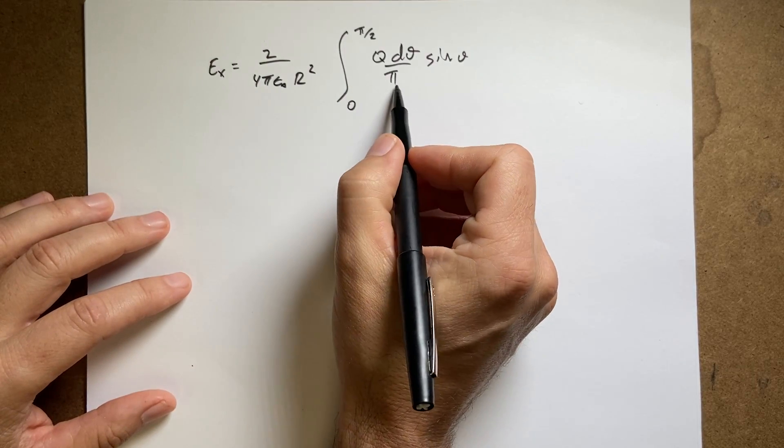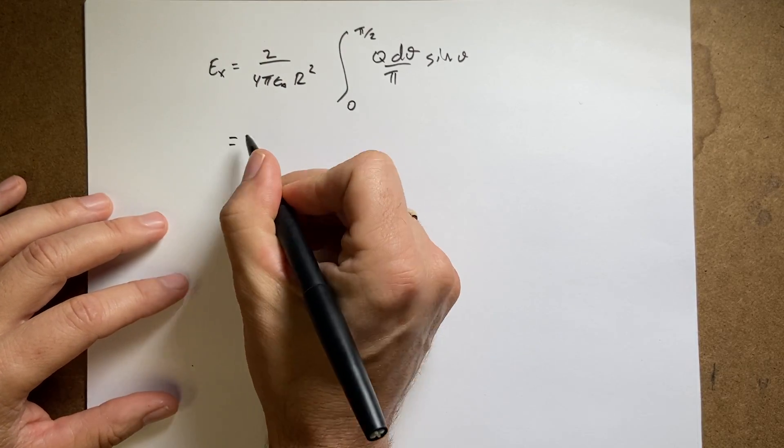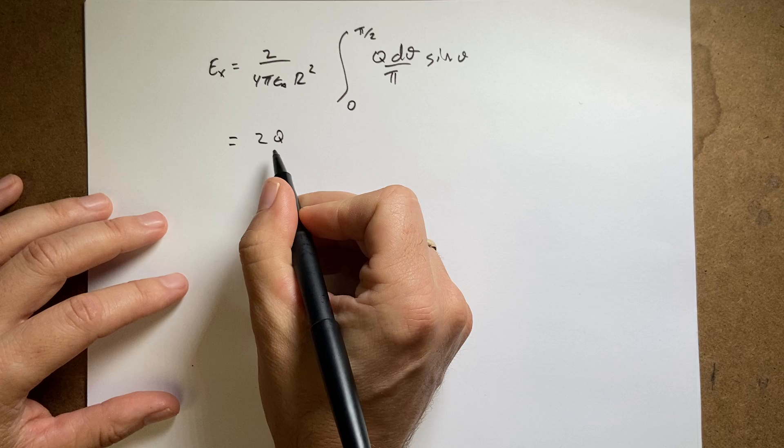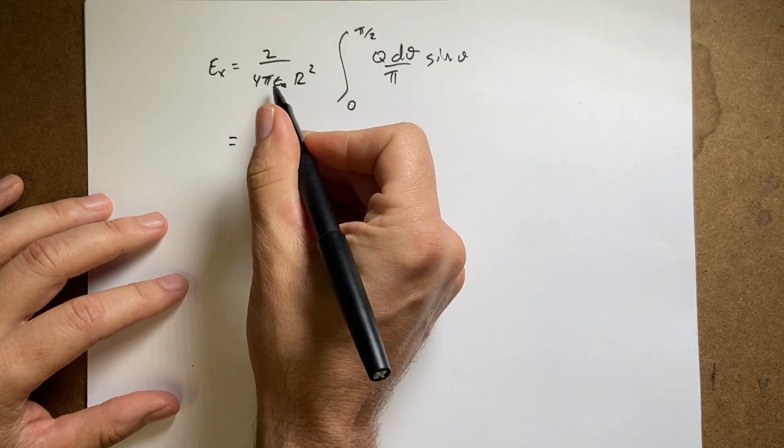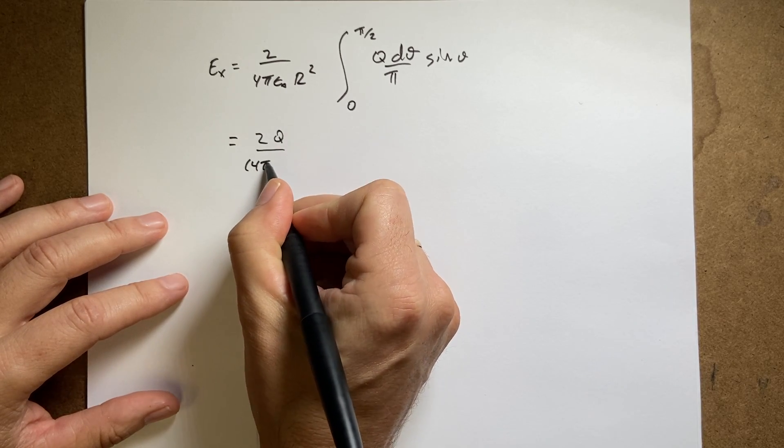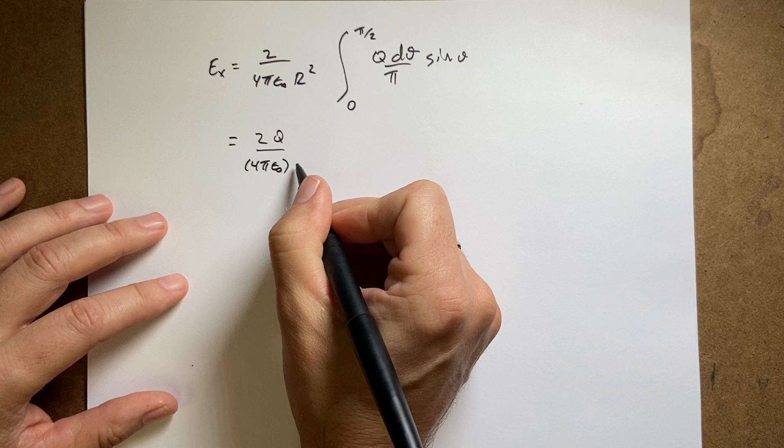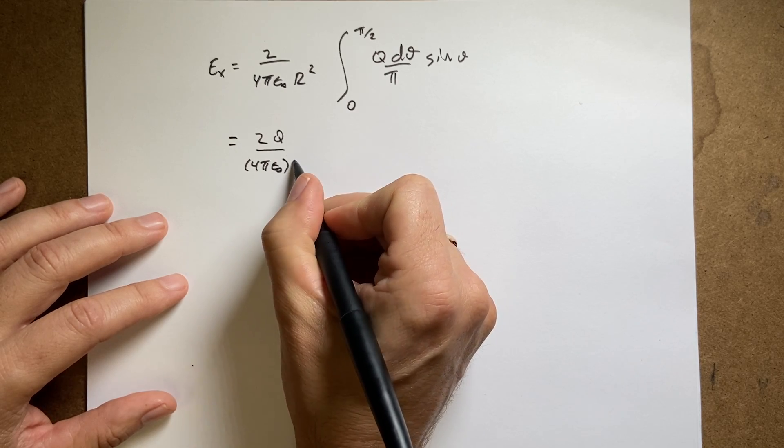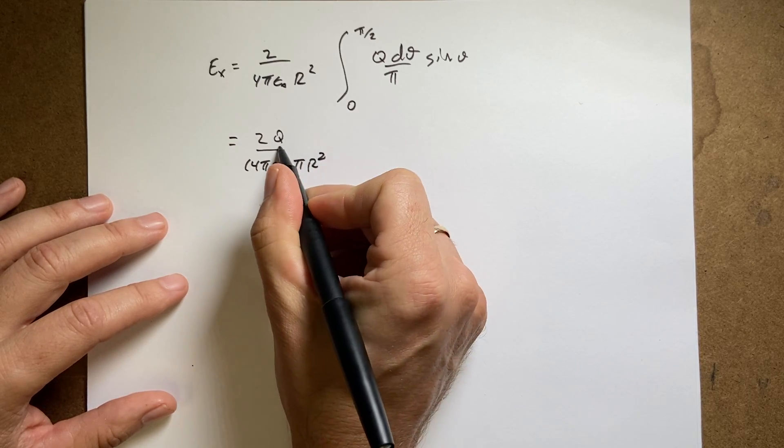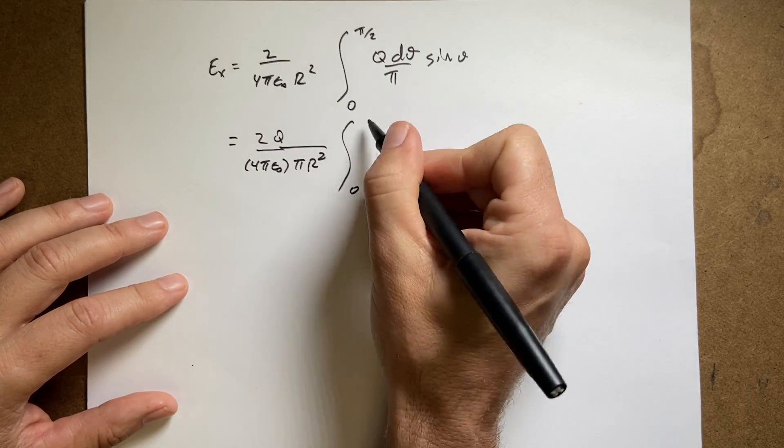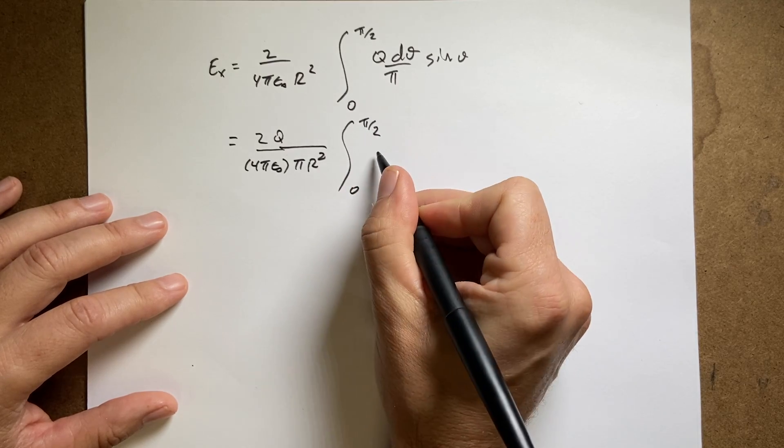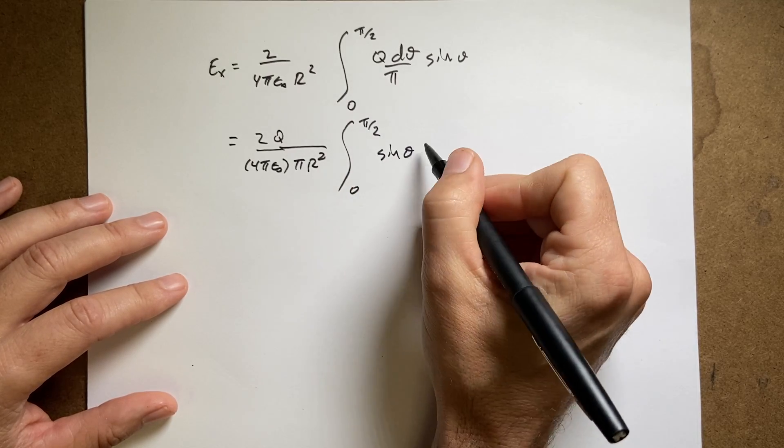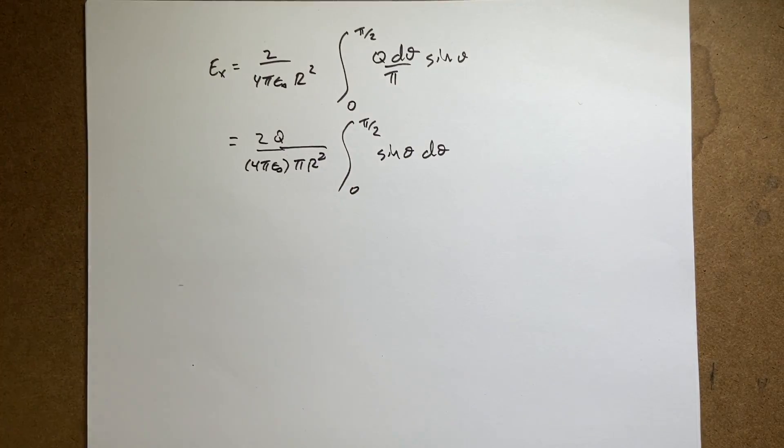I can factor out the q over pi, and I get 2q over, I'm going to leave this as 4 pi epsilon naught, then I have pi r squared, 0 to pi over 2 sine theta d theta. Now I can integrate, because now I have the integration variable and the other variable in the same match.